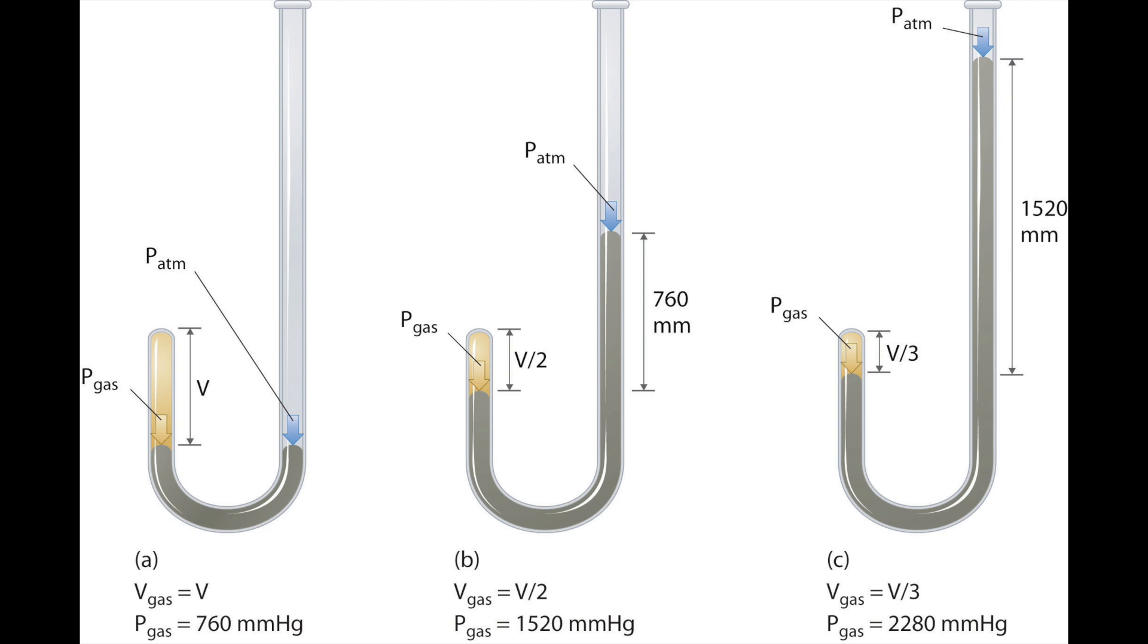If we compare figures A, B, and C, as the volume decreases by half, the pressure of the gas doubles. Comparing A and C, as you decrease the volume by a third, the pressure of the gas triples to 2,280 mmHg.